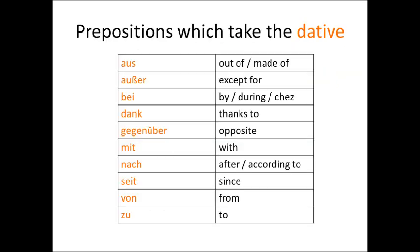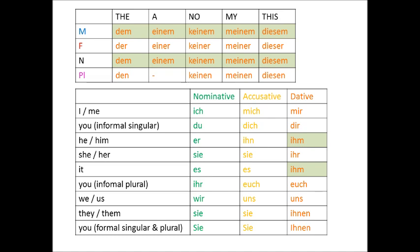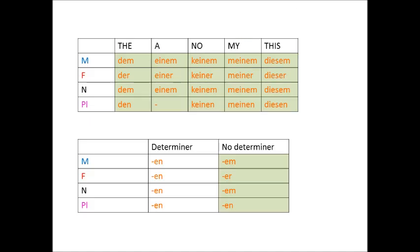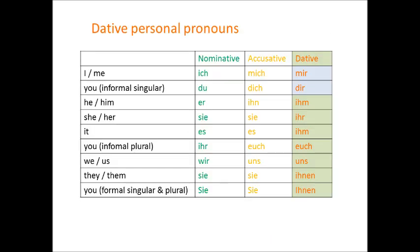You'll also find the dative after certain prepositions and used instead of possessive pronouns when referring to body parts. You'll recognise masculine and neuter personal pronouns and determiners as all of these end in m or em. Feminine ones end in r or er, and plural determiners end in en. As to adjectives: when there's no determiner, they have the same ending the determiner would have had, but when there is a determiner, they all end in en. Intermediate and advanced learners, don't forget that dative plurals gain an n or en on the end unless they already ended in an n or an s. Beginners, you should probably mainly focus on the fact that the dative form of ich is mir and the dative form of du is dir — everything else you can learn later.